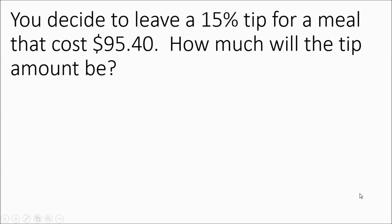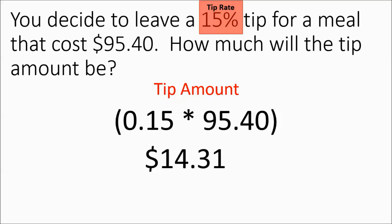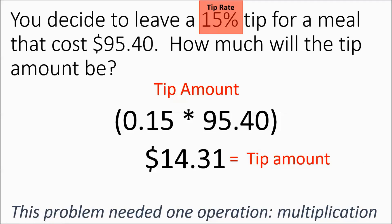You decide to leave a 15% tip for a meal that costs $95.40. How much will the tip amount be? They're not asking for the total cost here — they're only asking for the tip amount. So that's a one-operation problem; you're just going to multiply. You're just looking for the tip amount, and you do that by taking the tip rate and multiplying it by the original cost. That's going to give you $14.31. Sometimes your decimal might go more than two places — always round to the hundredths place for money. This only needed one operation, which was the multiplying.